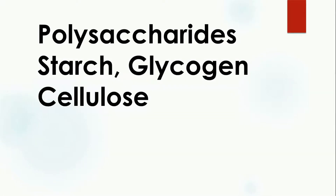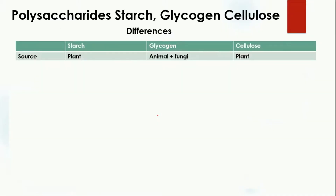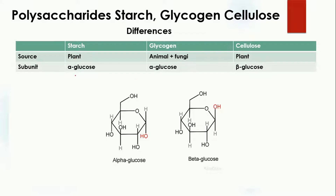Today we are going to study about polysaccharides — starch, glycogen, and cellulose — and their differences. Starch can be taken from plants, glycogen can be obtained from animals or fungi, and cellulose is also sourced from plants. The subunits that make starch are alpha glucose; in the case of glycogen, alpha glucose is also present.